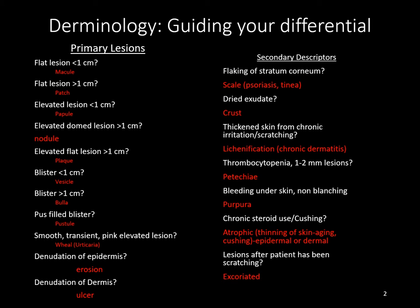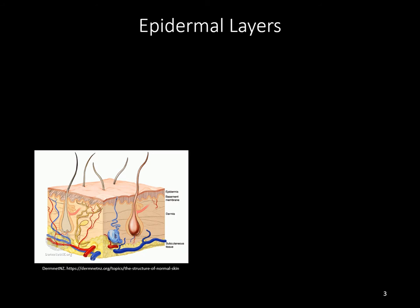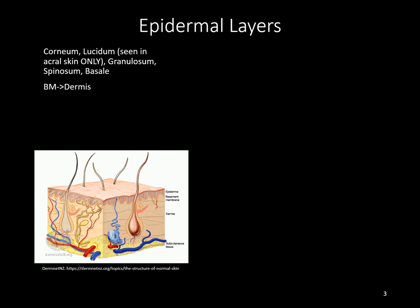Going over some more basics of dermatology — we have the epidermal layers and the acronym 'Canned Lasagna Goes So Bad' (CLGSB), where the first letter of each word gives you the first five layers of the epidermis: stratum Corneum, stratum Lucidum (only seen in acral skin — palms and soles), stratum Granulosum, stratum Spinosum, and stratum Basale.